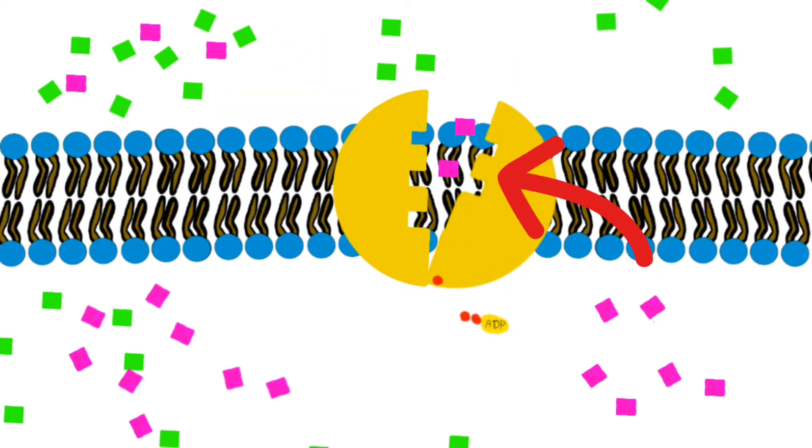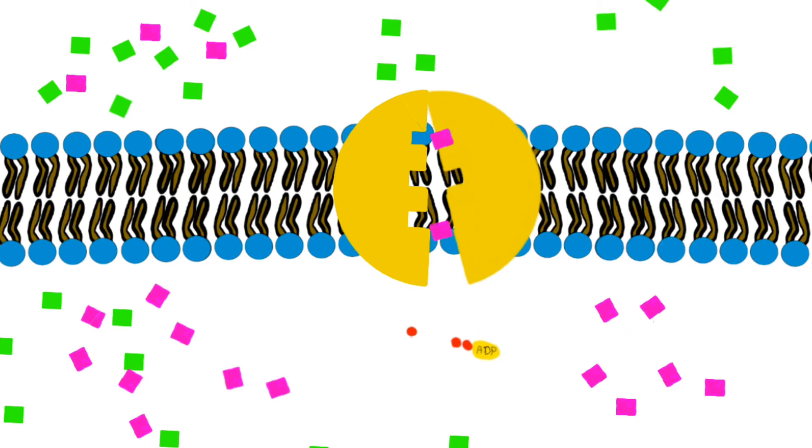The fourth step is that two potassium ions, which are here the purple squares, will sit in their location and dephosphorylation will occur. The dephosphorylated pump will undergo a conformational change and will open on the other side of the membrane and thus releasing the two potassium ions inside of the cell.